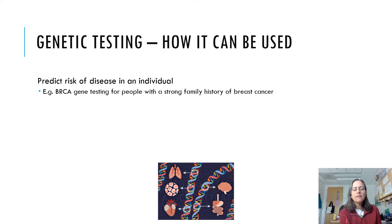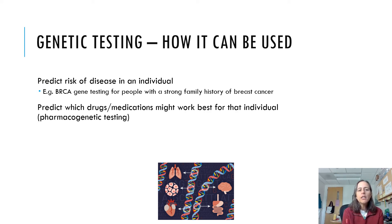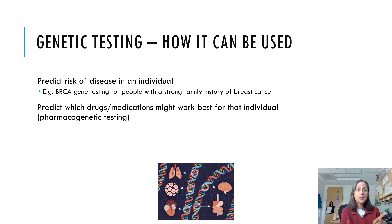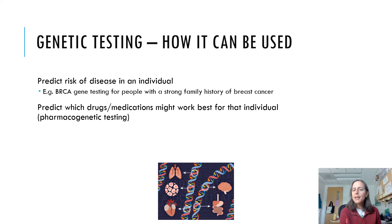Some genetic markers indicate slightly increased risk for certain cancers or heart disease, but we don't yet have excellent ways of knowing how to intervene or how they'll translate to an individual's risk — so this kind of testing is still rather in its infancy. A second way we can use genetic testing is to see which drugs or medications might work best for a particular individual — individualized medicine based on your genetic profile. This is even more in its infancy. There are a couple of medications for which we know a specific genetic marker can tell us whether someone will respond better to one medication versus another, but we're just getting started.